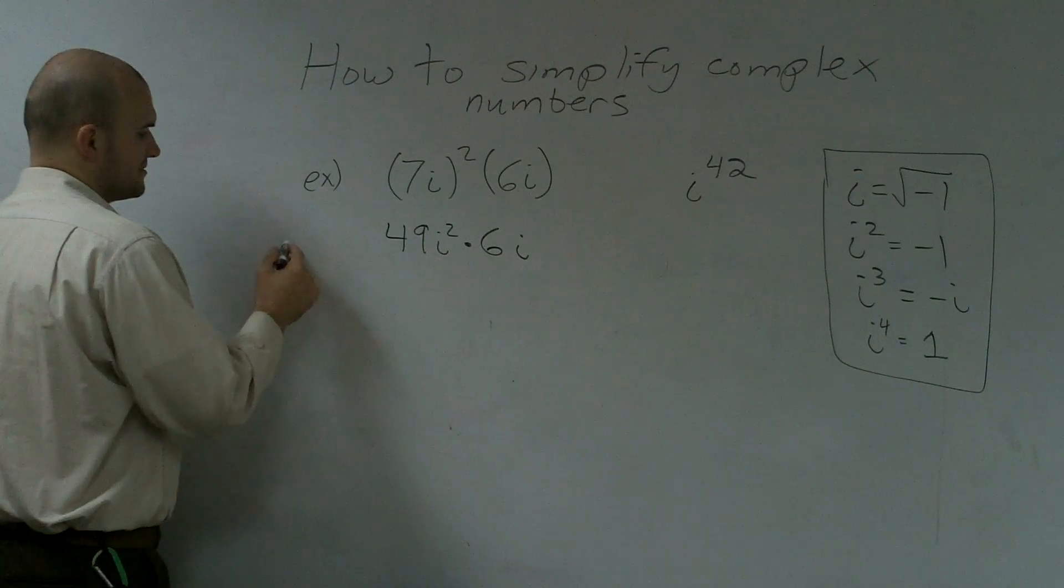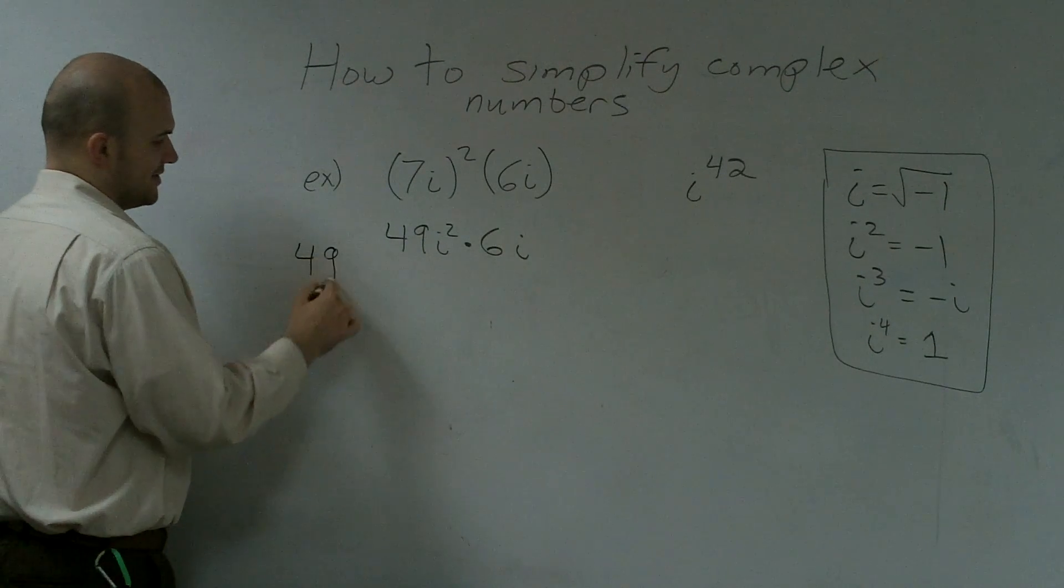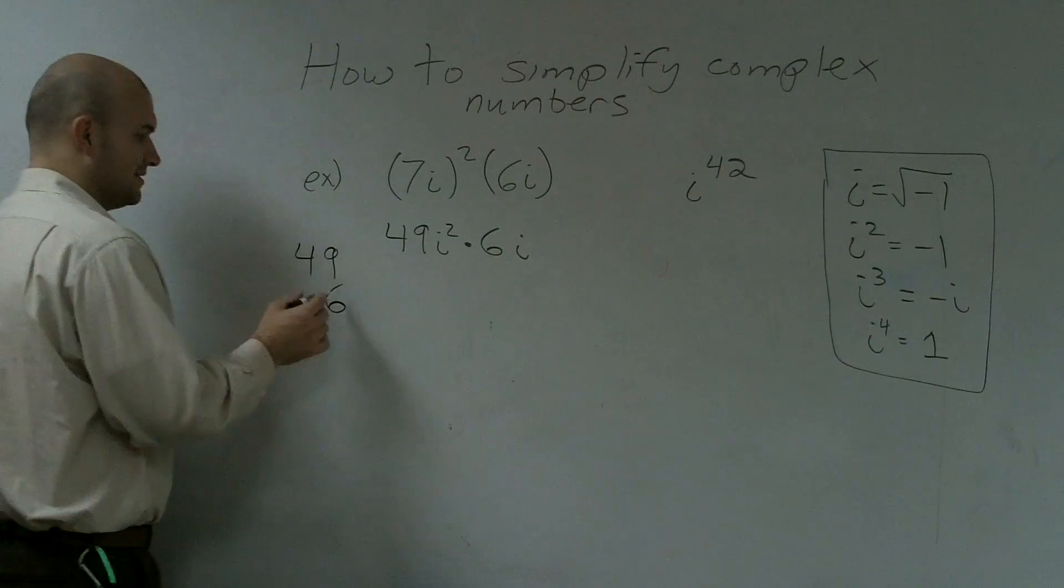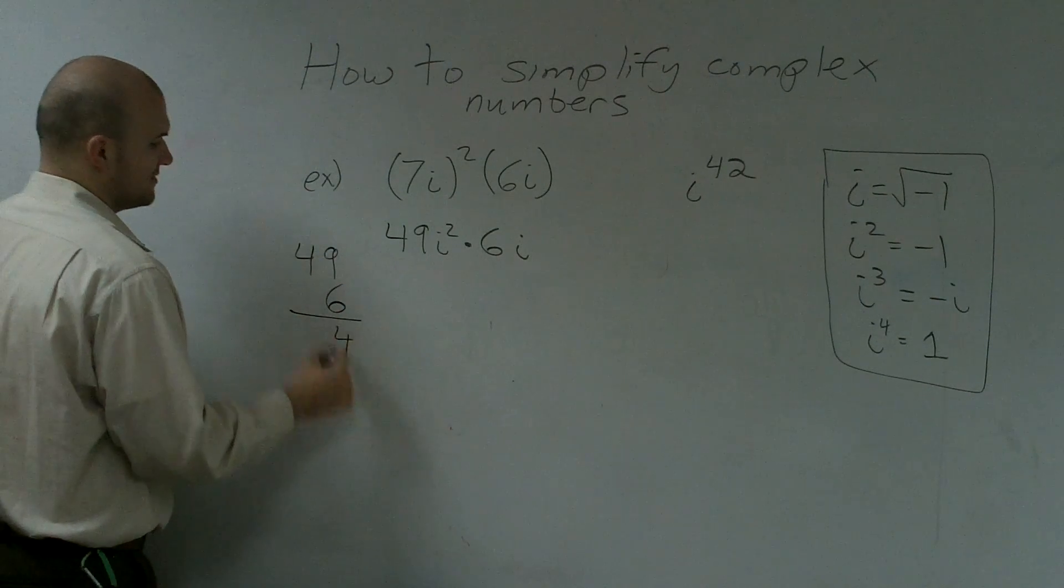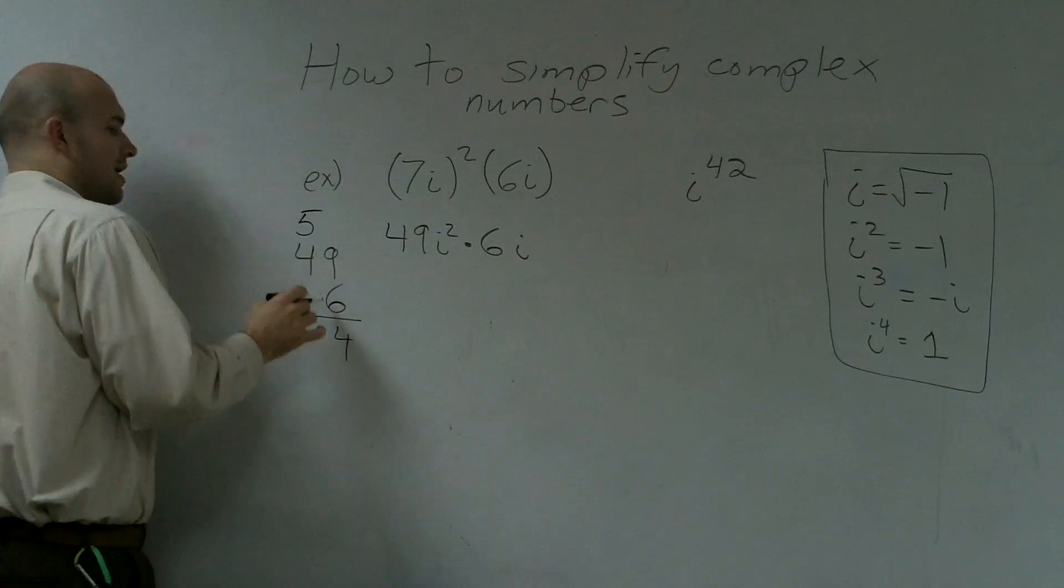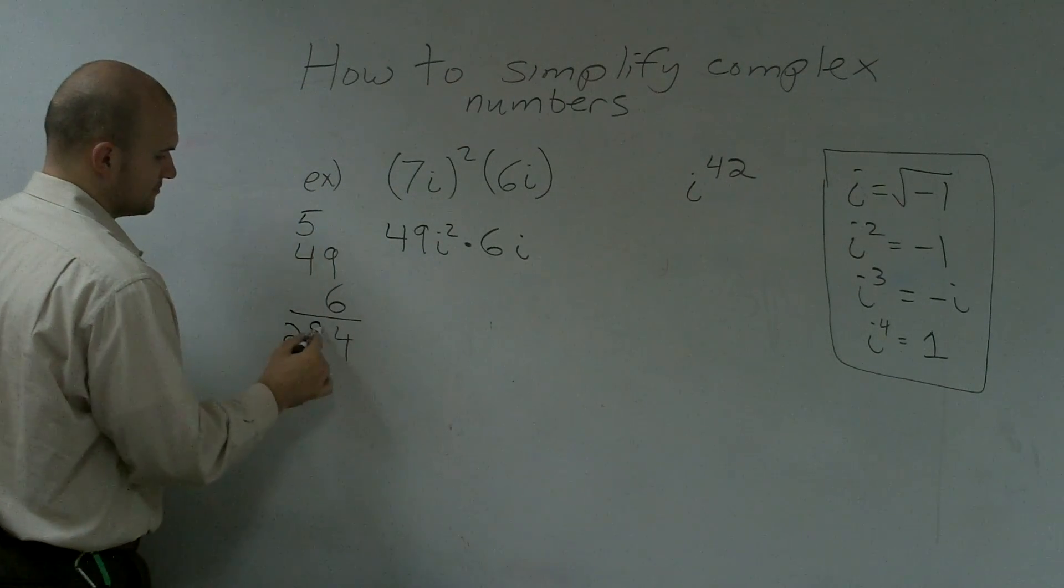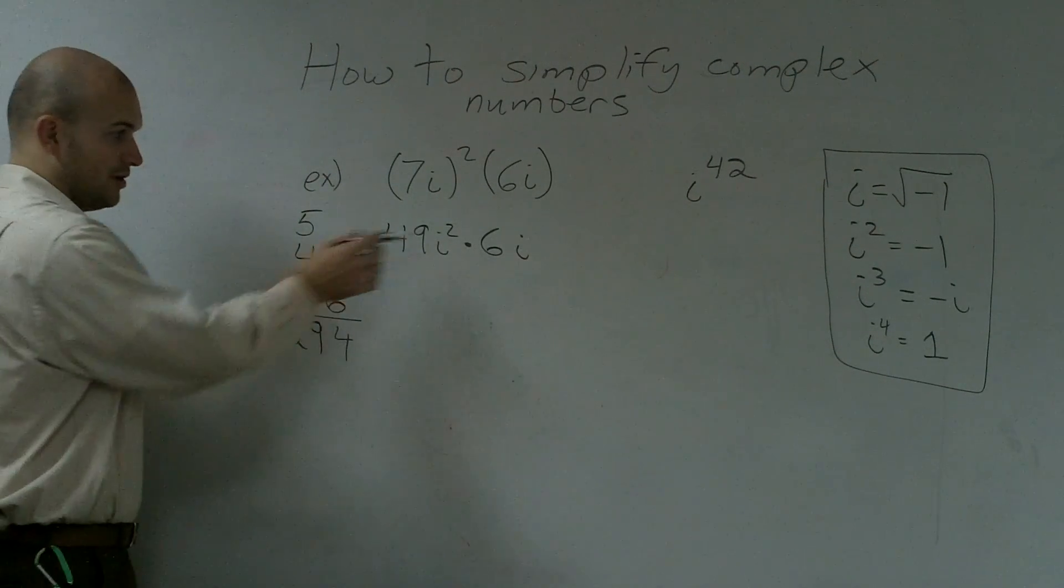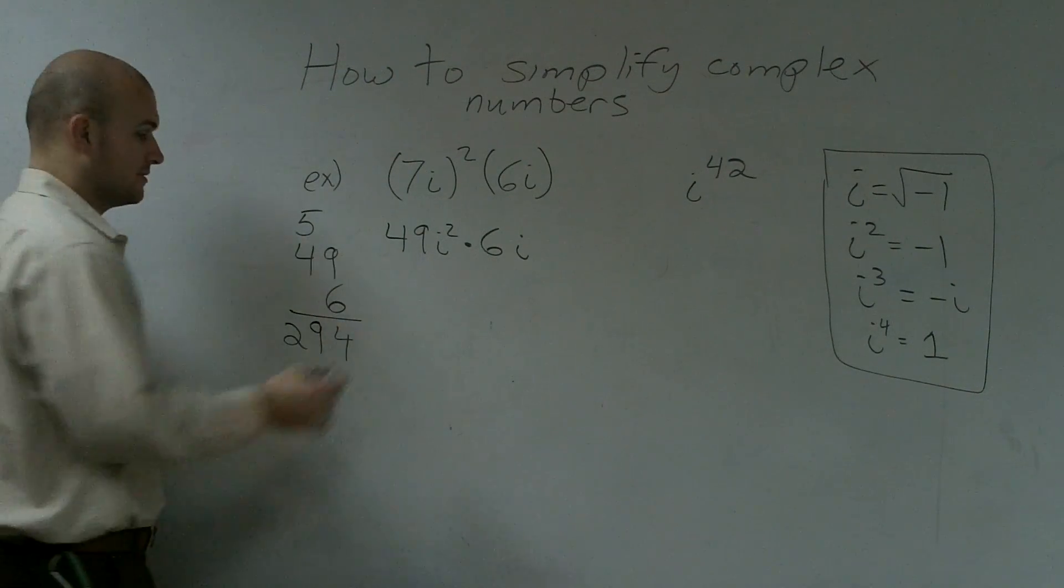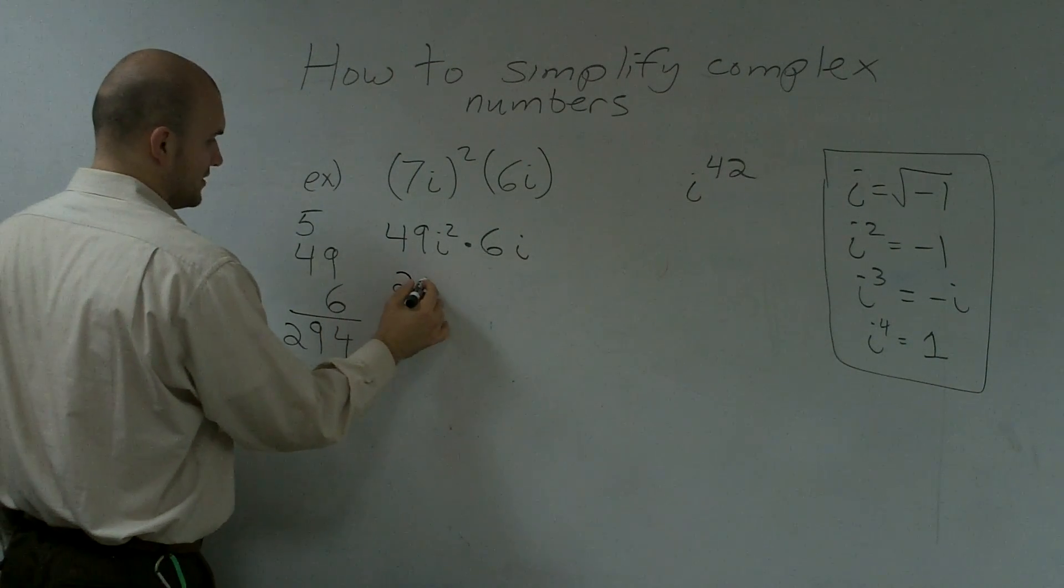Now I need to do 49 times 6. And 49 times 6, let's say I don't have a calculator, so I'm going to do the old time method. 6 times 9 is going to be 54. 6 times 4 is 24, plus 5 is 29. Right? I'm multiplying 6 times my 49. So therefore I get 294.